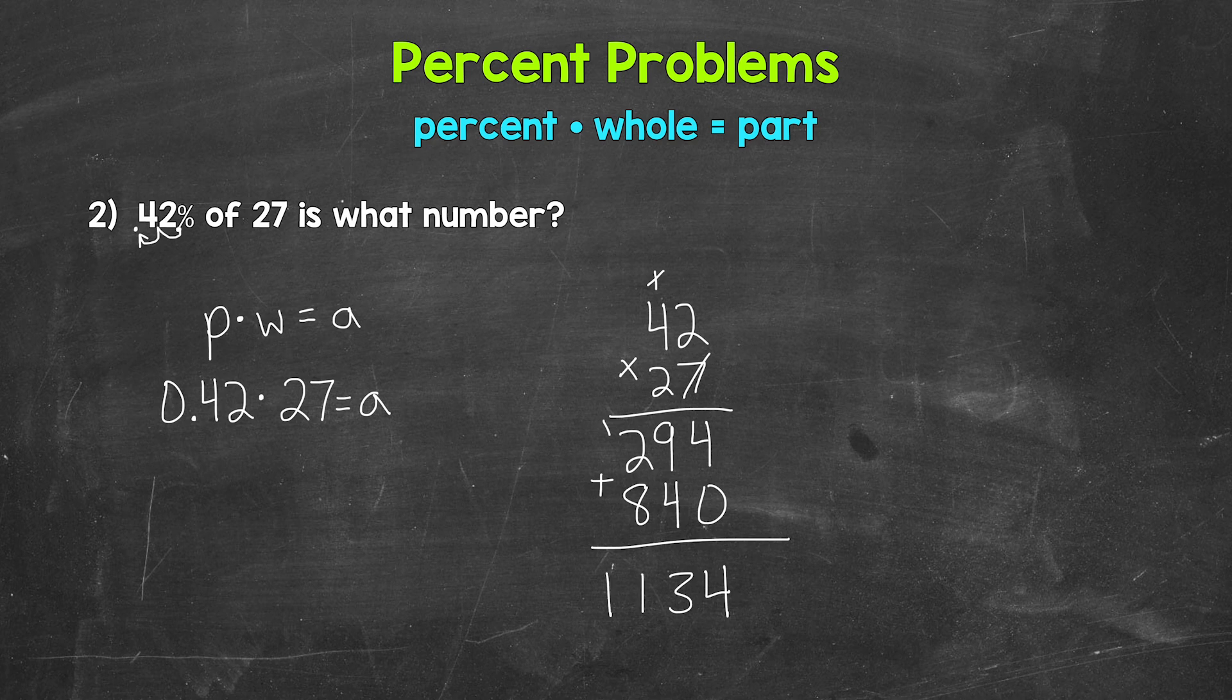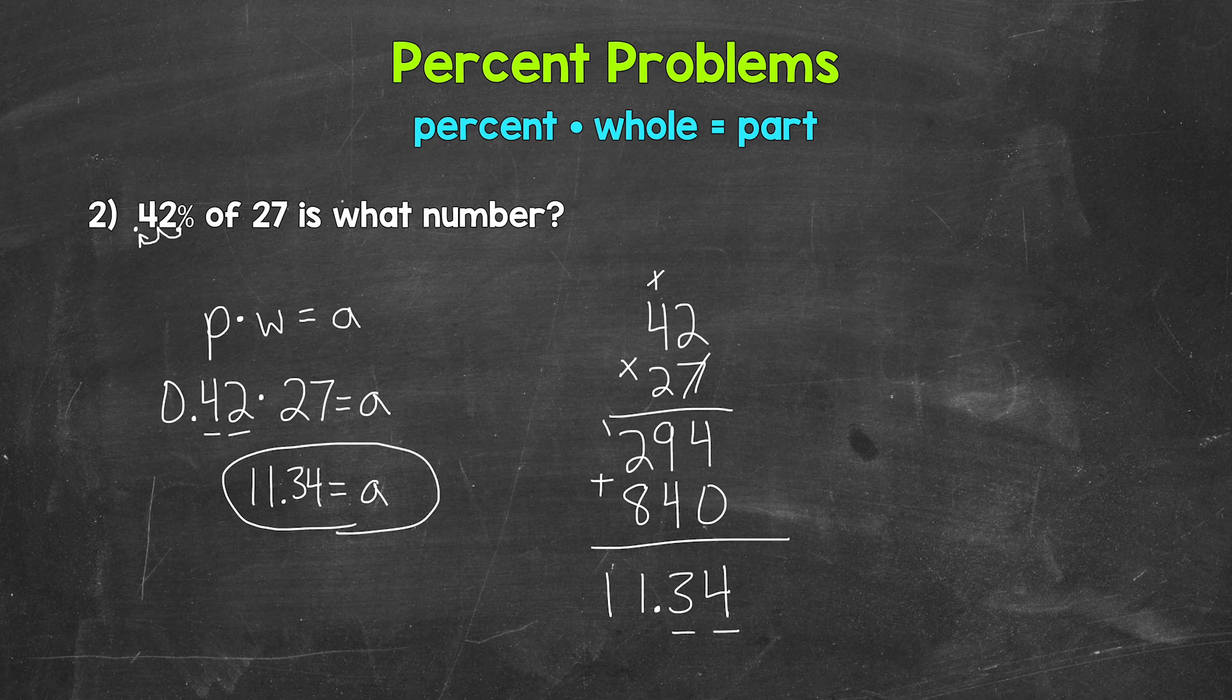And now we can place the decimal. So in our original problem, we have 1, 2 digits to the right of a decimal. That means our answer needs 2. So 1, 2 digits to the right of the decimal. We get 11.34, 11 and 34 hundredths. So our part A equals 11.34, 11 and 34 hundredths. So 42% of 27 is 11 and 34 hundredths. So there you have it.